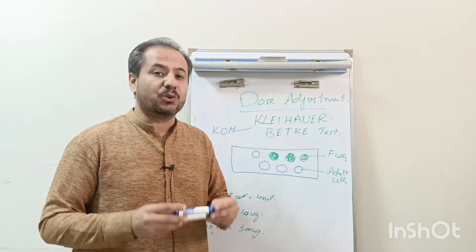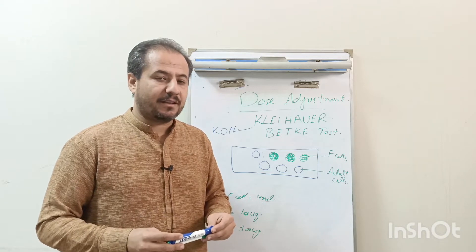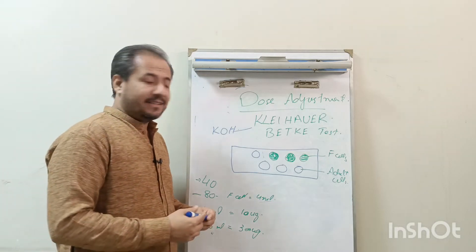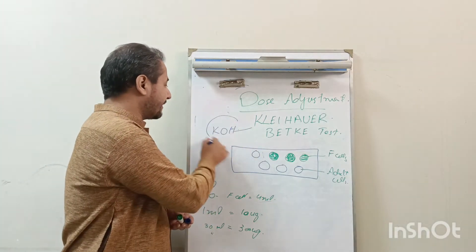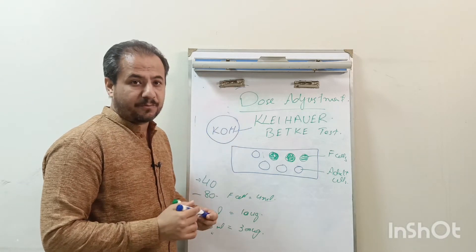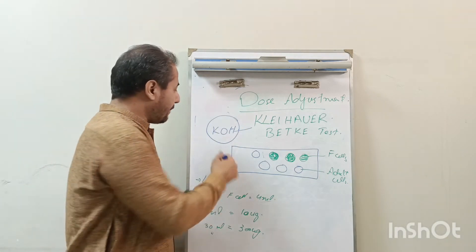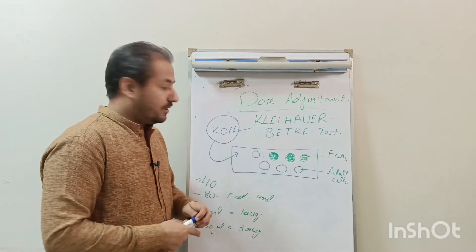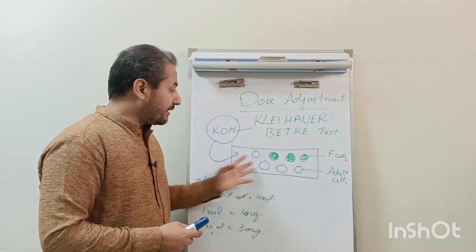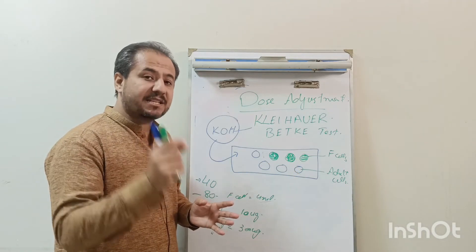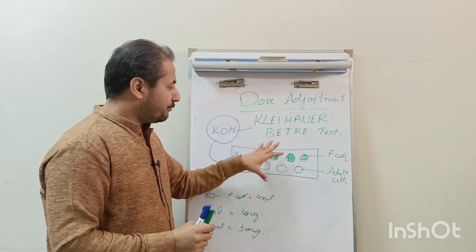The basic principle of Kleihauer test is that we have potassium hydroxide, which is basically a reagent used in this test. We apply this KOH on a slide. First we have to make a peripheral smear from the mother's blood, we will dry it, and then we will apply potassium hydroxide on this film.